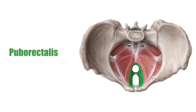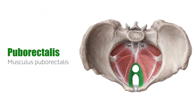The puborectalis muscle originates lateral from the symphysis on both sides and encircles the rectum, which causes a ventral bend between rectum and anal canal. It is partly interwoven with the external anal sphincter.